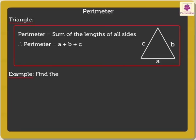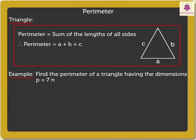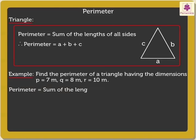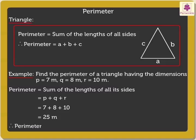Let's find the perimeter of a triangle having the dimensions P equal to 7 meters, Q equal to 8 meters, and R equal to 10 meters. We know that perimeter of a triangle is equal to the sum of the lengths of all its sides, which is equal to P plus Q plus R — that is 7 plus 8 plus 10, which equals 25 meters. Thus, perimeter of the triangle is 25 meters.